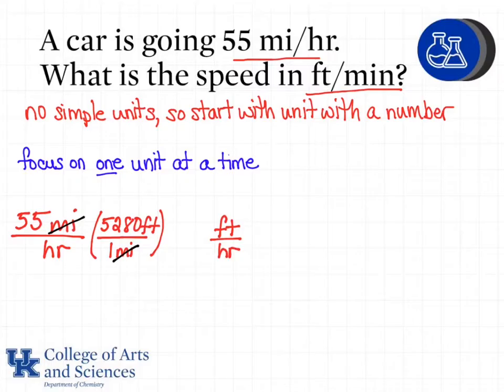If I were to stop right now I would have units of feet per hour. So I see that I've gotten closer to what I want, feet per minute, because I have my numerator in the correct units but my denominator is not, which means I need to keep going in the setup of my problem.